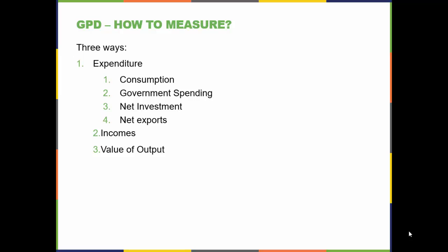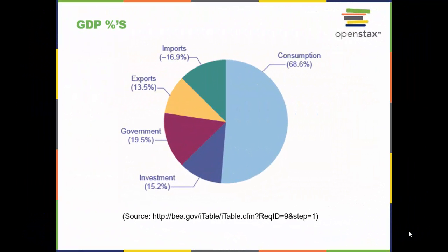Gross domestic product, or GDP, is a figure that measures the size of a nation's economy. There are three ways to come to this figure. One is by measuring the expenditures in an economy — that is often called the demand method. The second is by measuring the income produced in an economy, and the third method is by measuring the total dollar value of everything produced, often called the supply method or production method. Each method should provide the GDP figure of a nation's economy for the same period. We will now look deeper into the components of the demand-side measurement.